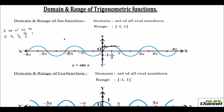Looking at the full XY plane: 0° is at the start, then π/2 (90°), then π (180°), then 3π/2 (270°), and 360°. The sine value starts at 0, rises to 1, comes back to 0, then goes to negative 1, and returns to 0 again — this pattern keeps repeating.